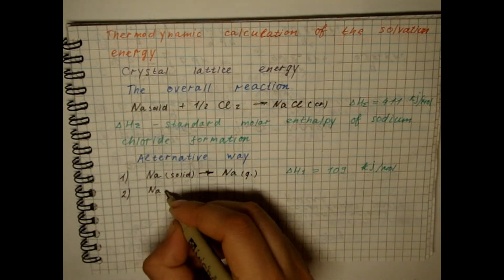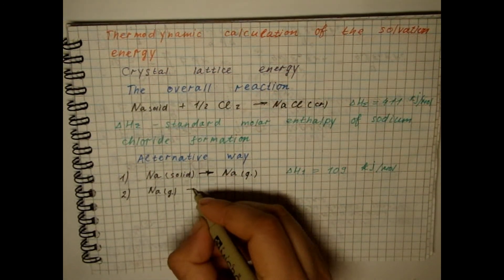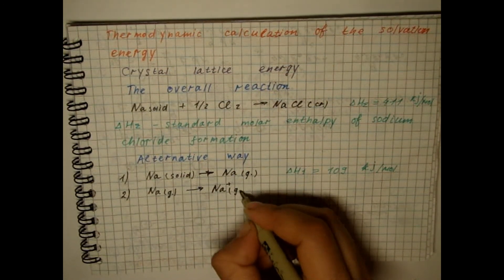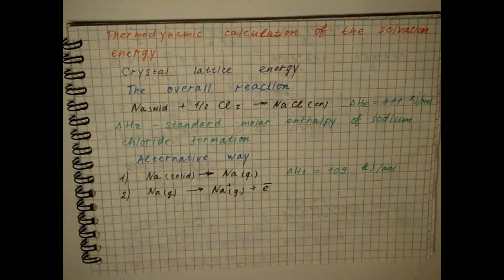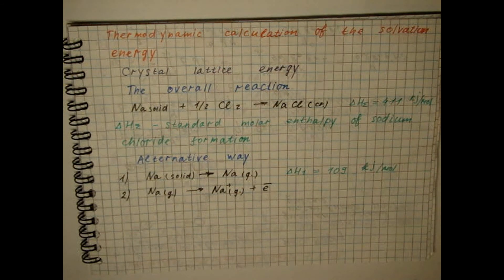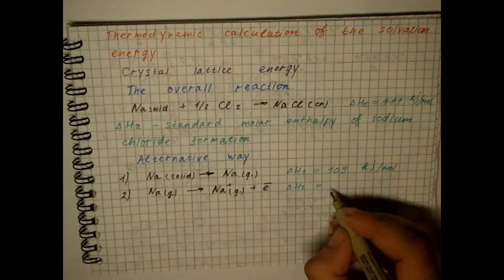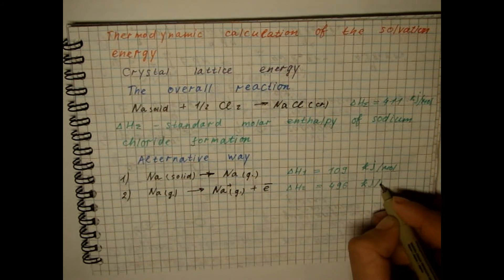The next process is the ionization of gaseous sodium. The corresponding change in enthalpy is equal to the first sodium ionization energy. Ionization energy is the amount of energy that must be spent to tear an electron from an atom and remove it from the sphere of influence of a positively charged nucleus.